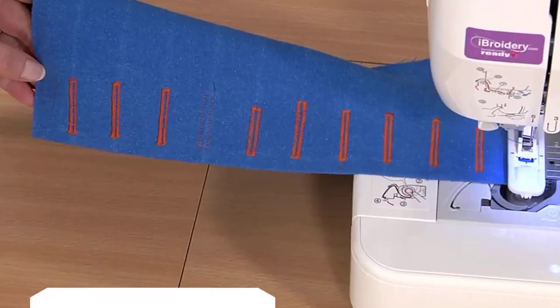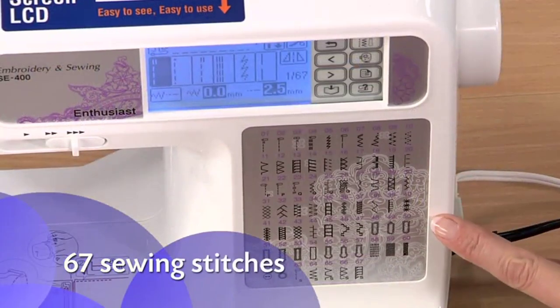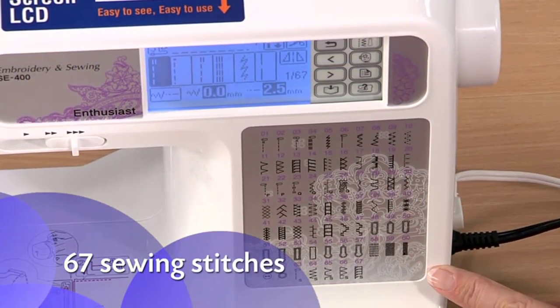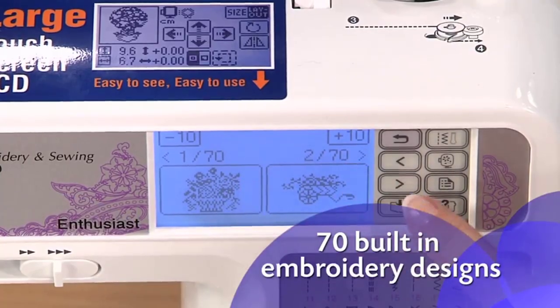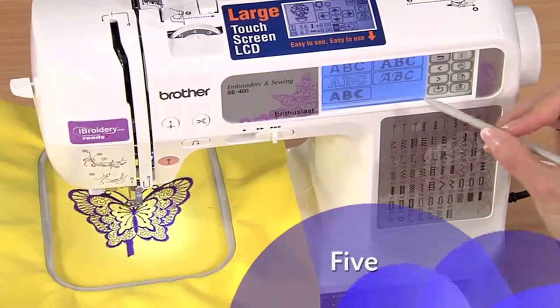The SE400 offers a versatile array of 67 sewing stitches, 70 built-in embroidery designs, 120 frame pattern combinations, and 5 fonts.